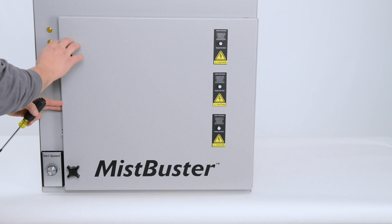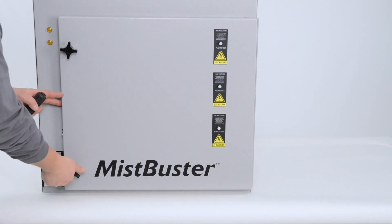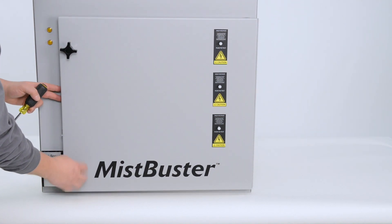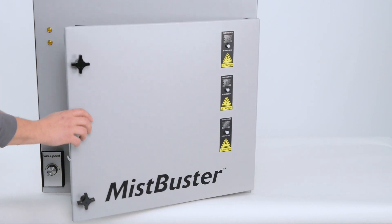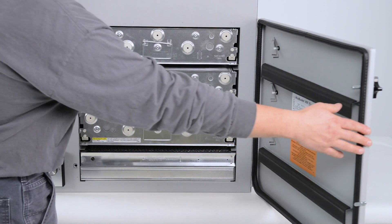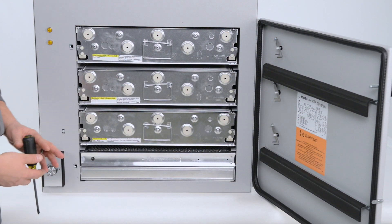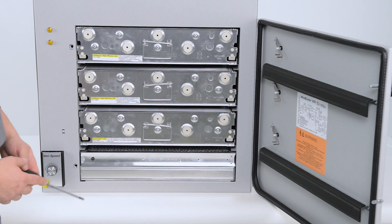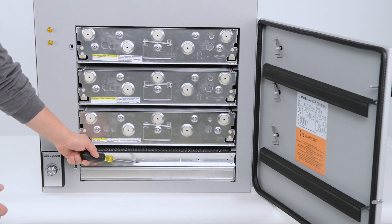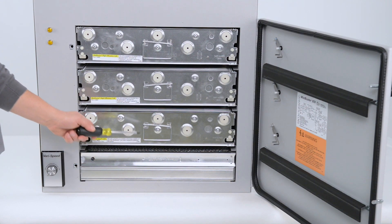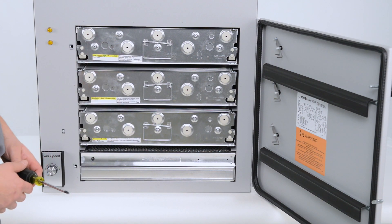Next you will turn the doorknobs counterclockwise until the door opens. You will see with this model there are two impinger sections that are two inches and three collection unicells.